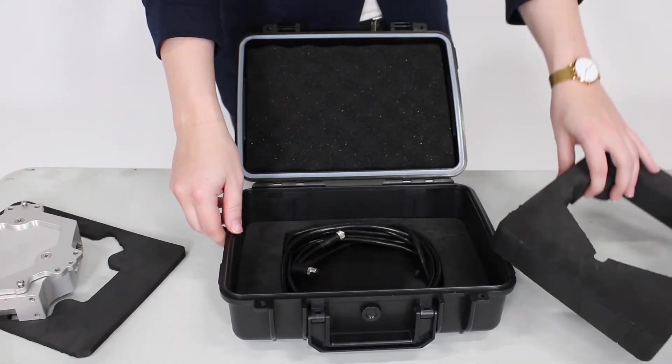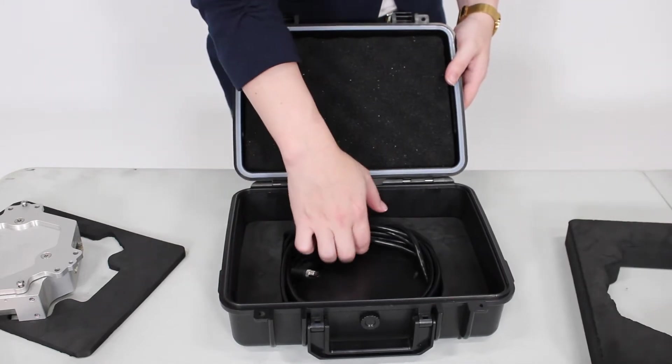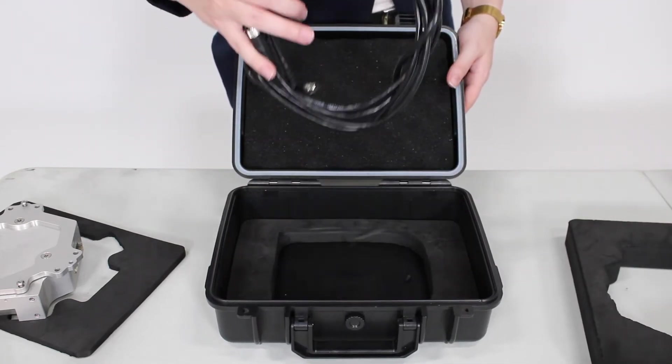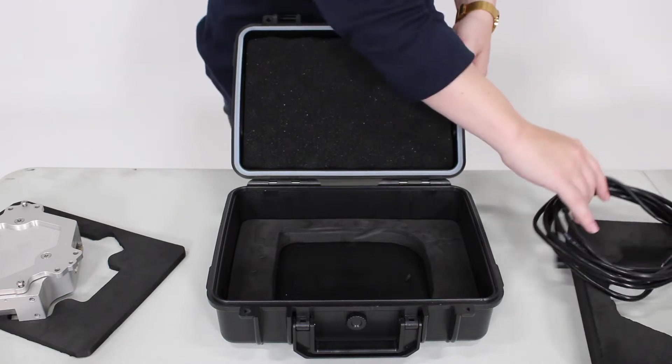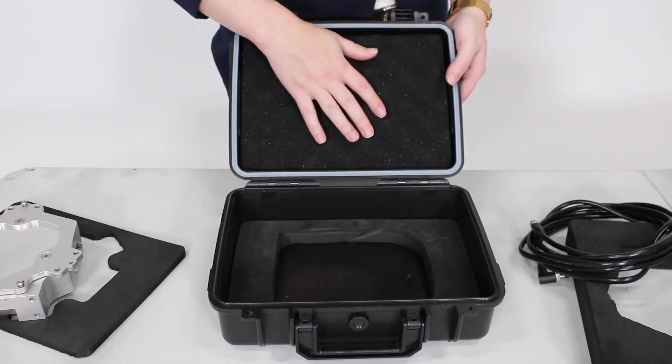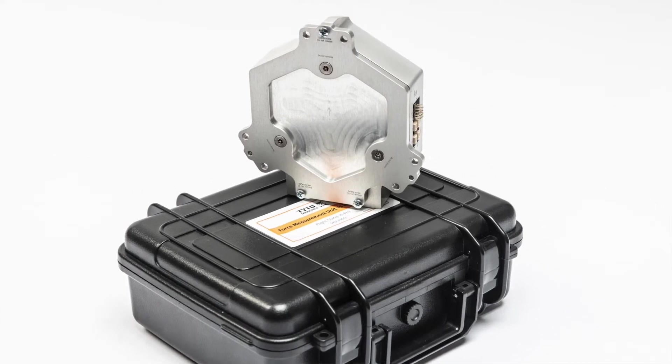Underneath the FMU is an M8 COM cable that is used to connect to the sync hub. You'll want to hold on to this case because you can use it to send back your FMU for recalibration if you want.